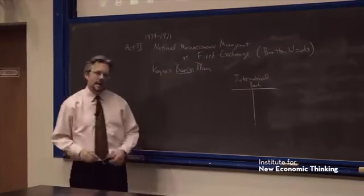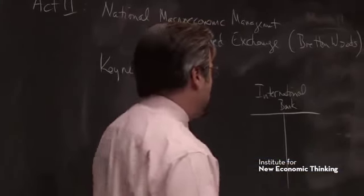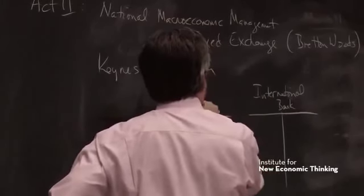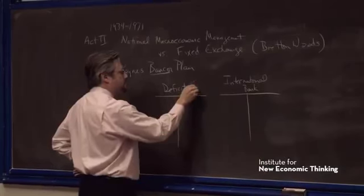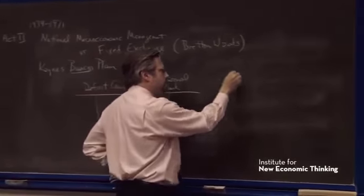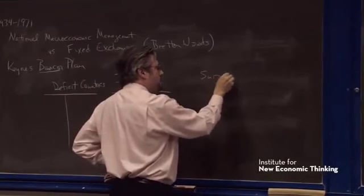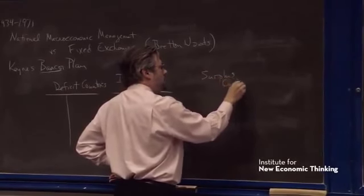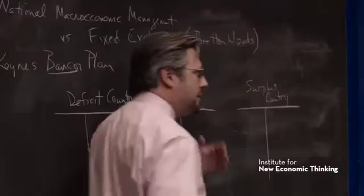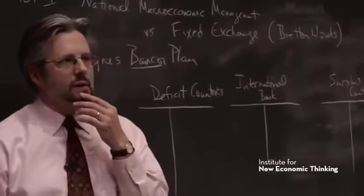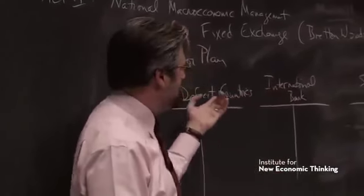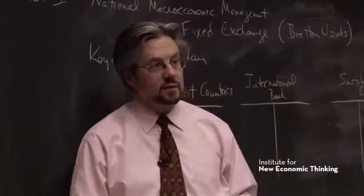Okay, and the way we're going to work this is that deficit countries, and surplus countries, will make payments to one another. The deficit countries will make payments to one another in this new invented currency called Bancor, instead of gold.